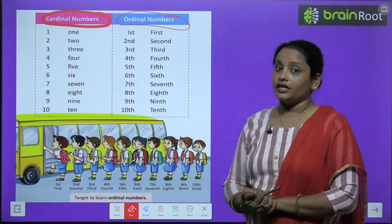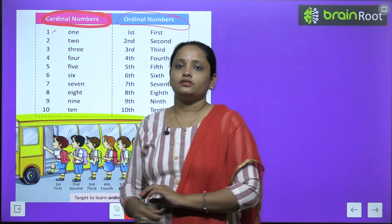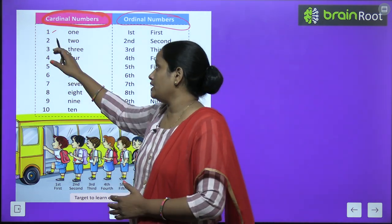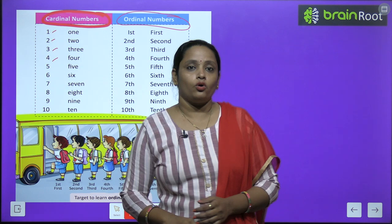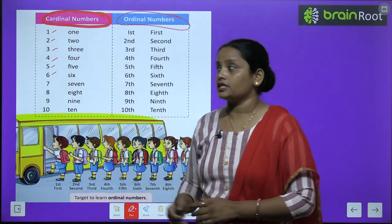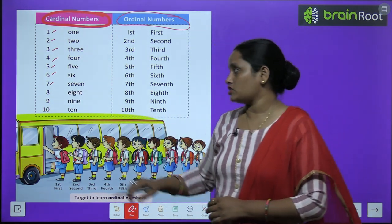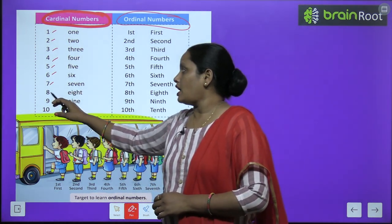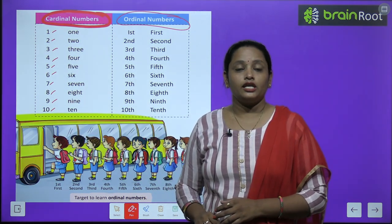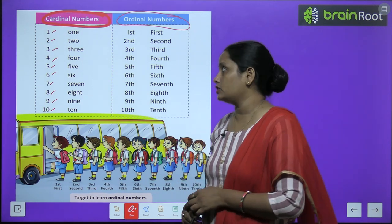So what are cardinal numbers? Let's read: 1, 2, 3, 4, 5, 6, 7, 8, 9, 10. So all these numbers I said — these are cardinal numbers.